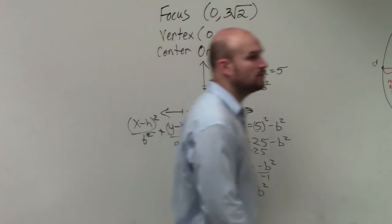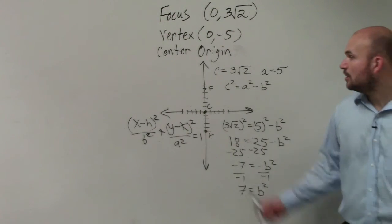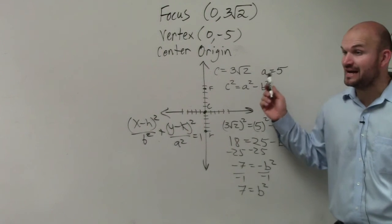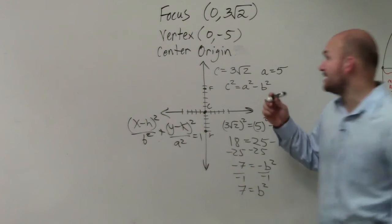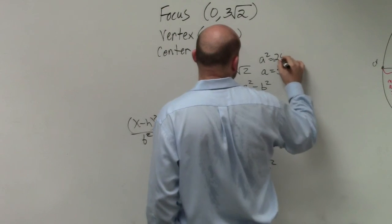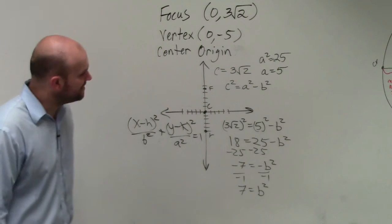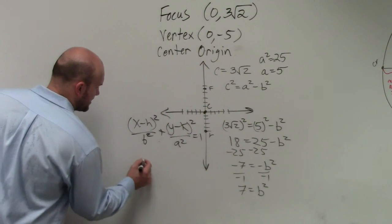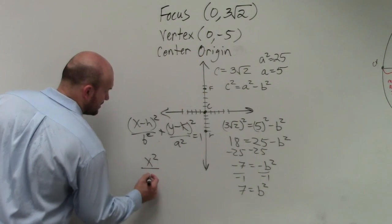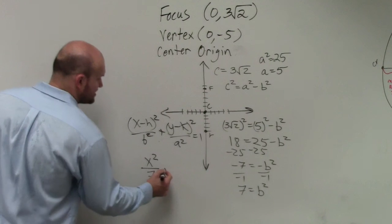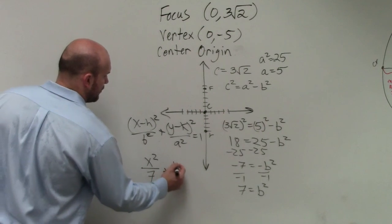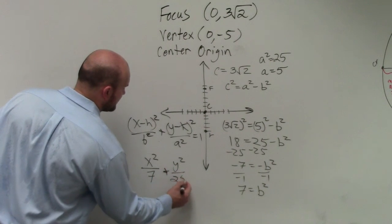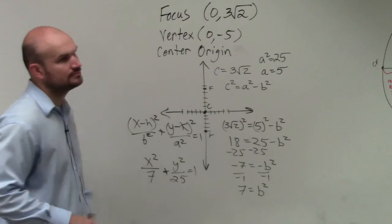So b squared equals 7. We already know what a is, which is 5. So we can square that to give us 25. So I can say a squared then is 25. So a squared is 25, b squared is 7, and the origin's at 0, 0, right? So I can easily just write x squared over 7 plus y squared over 25 equals 1.